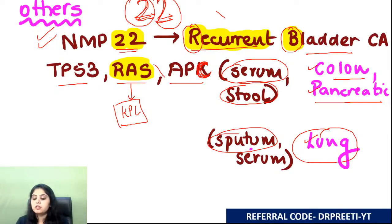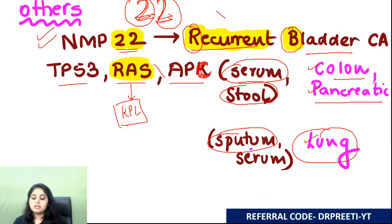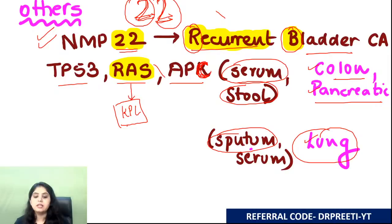That completes the tumor marker table, which was primarily a revision. NMP stands for nuclear matrix protein. Now moving on to the next table.